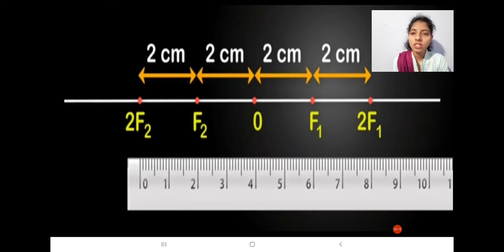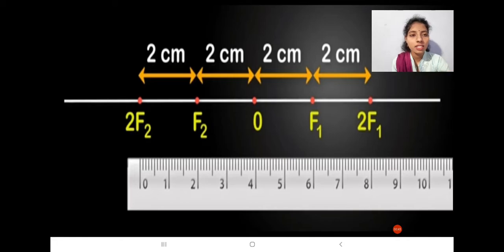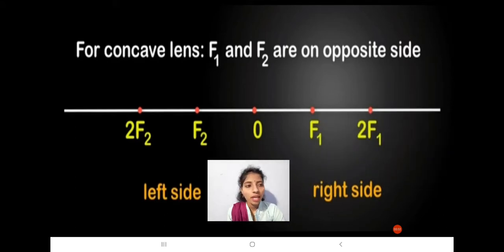First of all we need to draw the principal axis and mark the points on it. O is the optical center. We have to take the ruler and mark the points F1, 2F1, F2, and 2F2 on the principal axis. The distance between all these points is equal — we are taking 2 centimeters. For concave lenses, F1 and 2F1 are on the right side and F2 and 2F2 are on the left side.